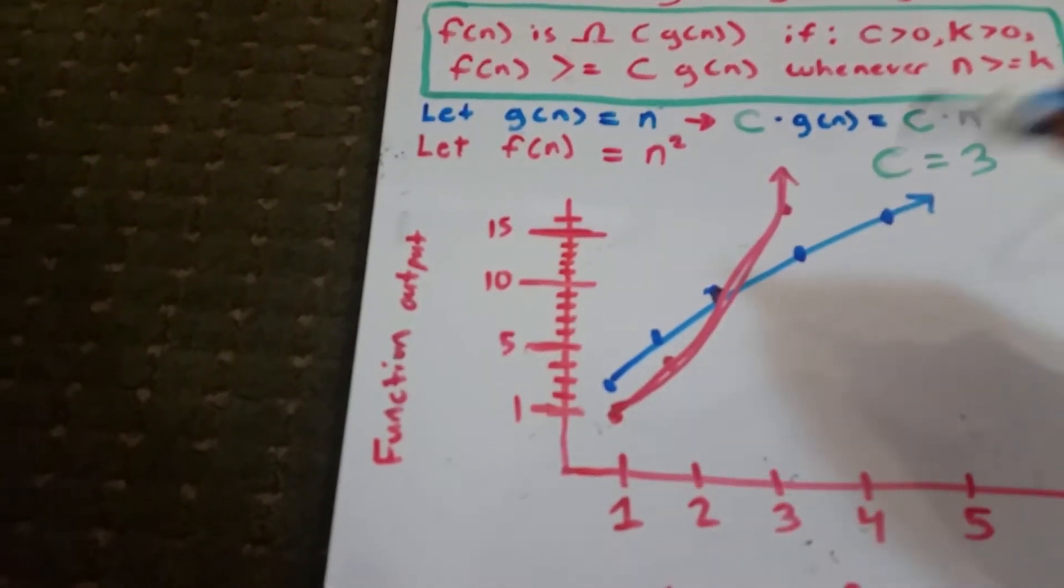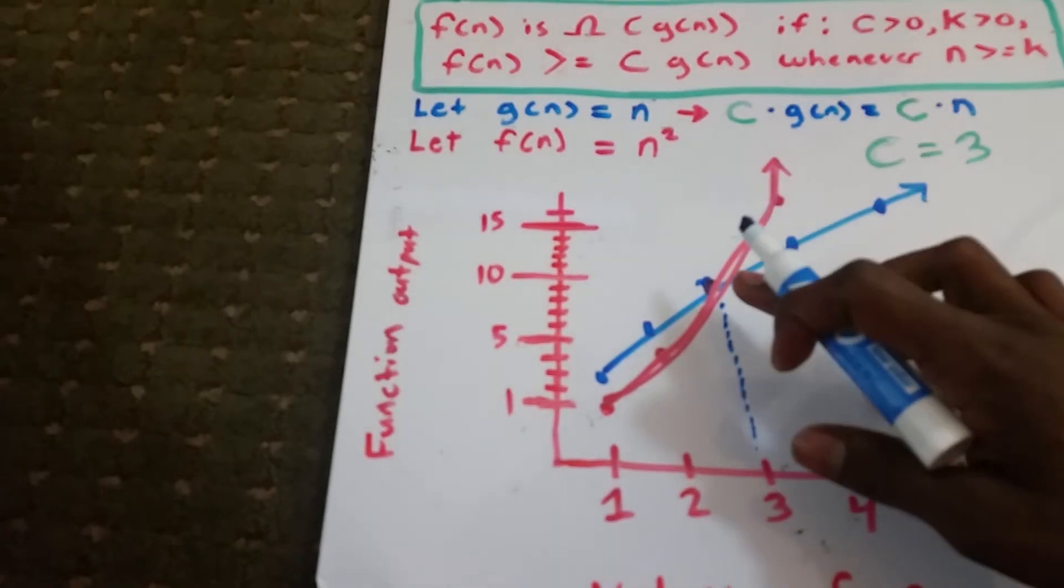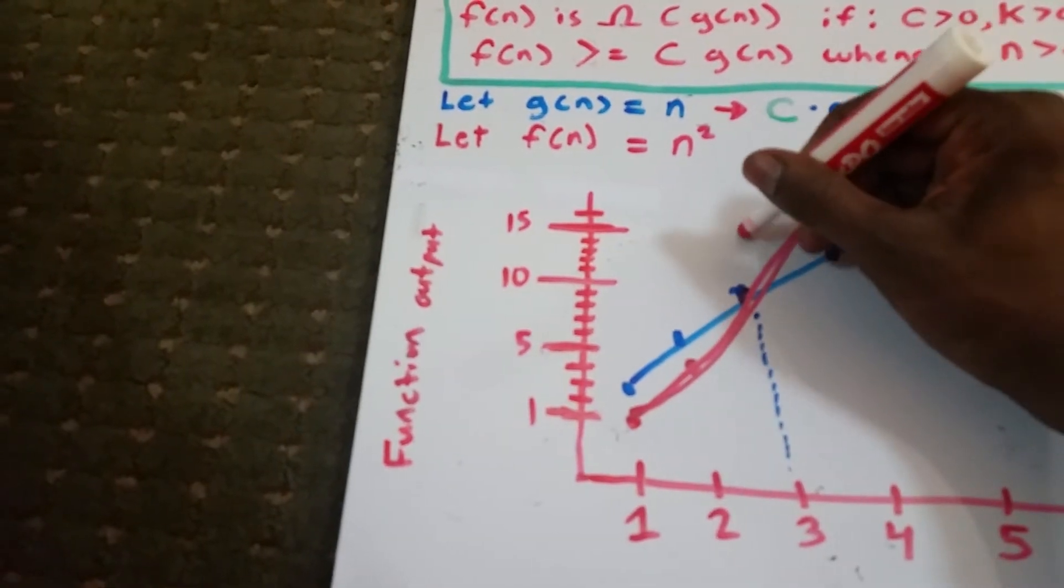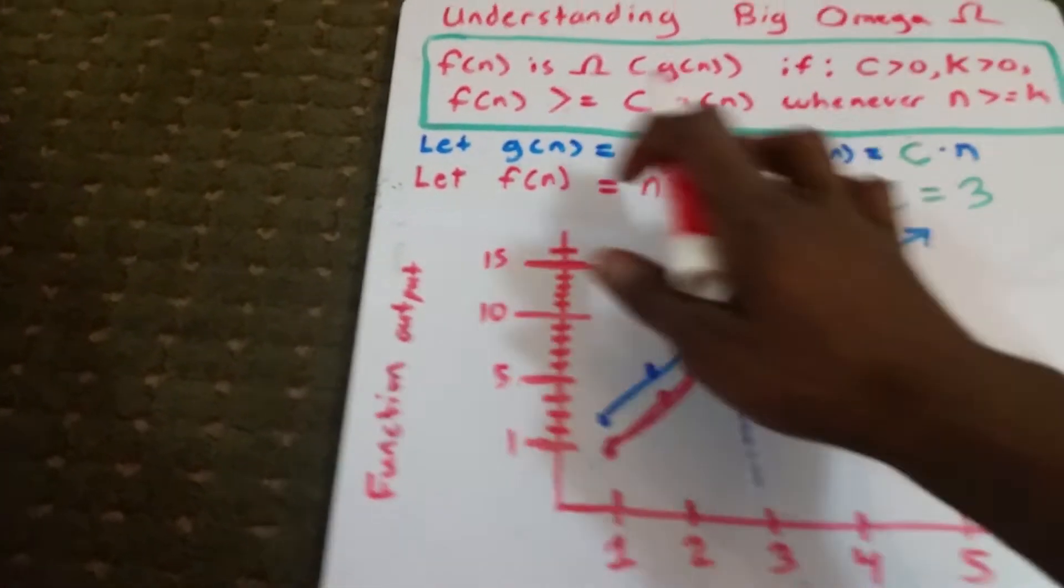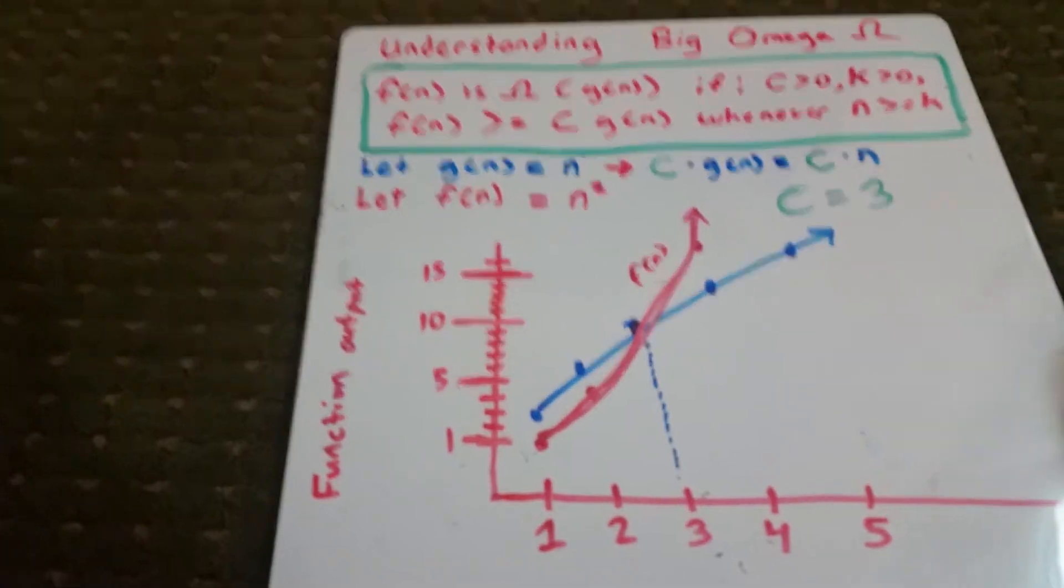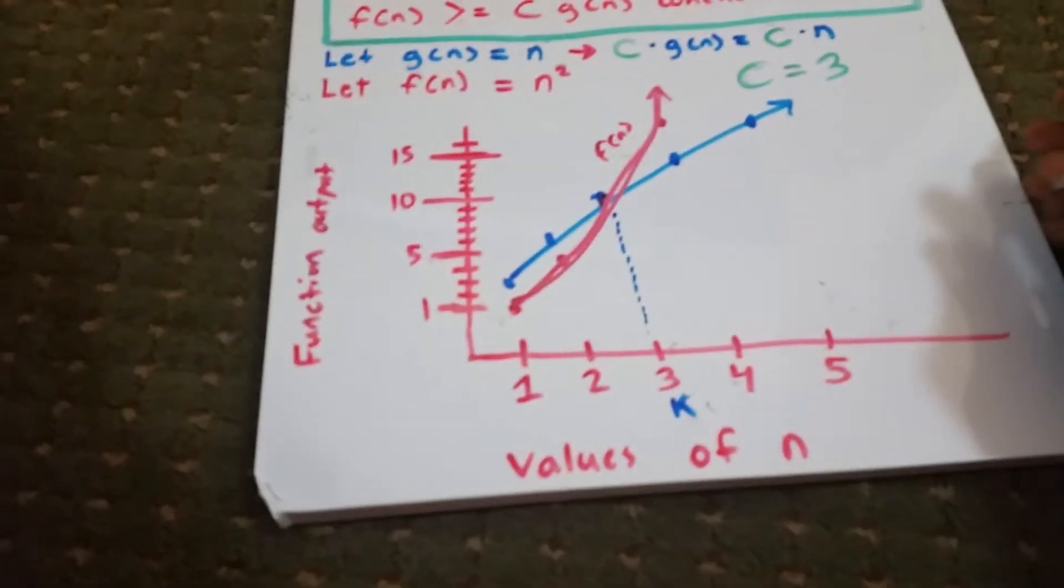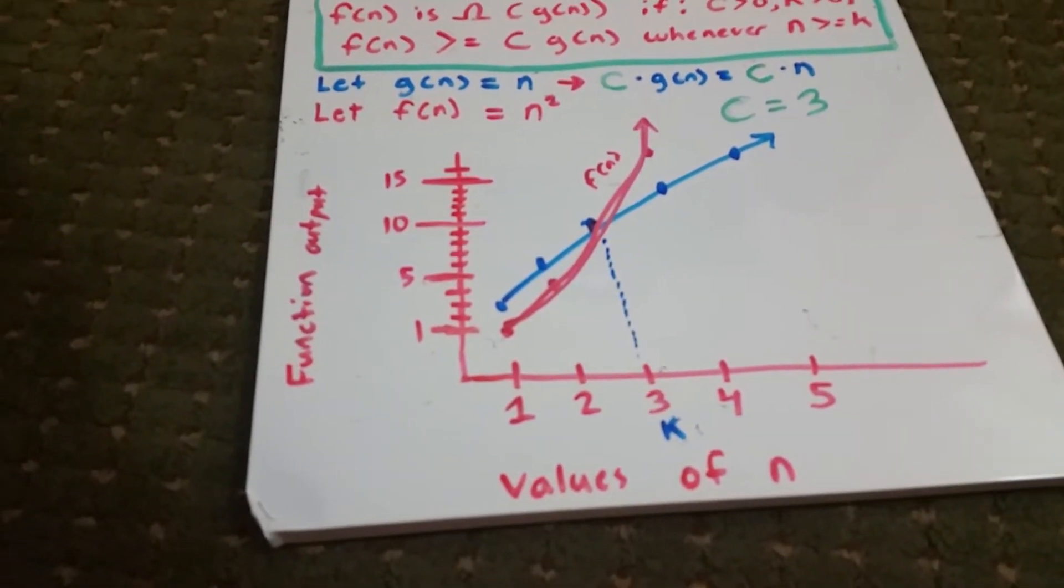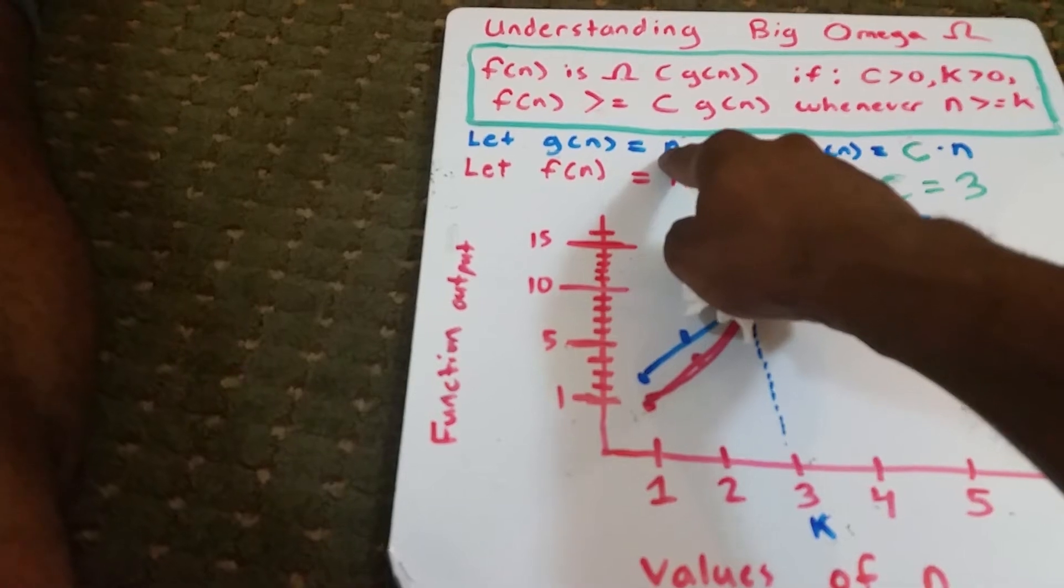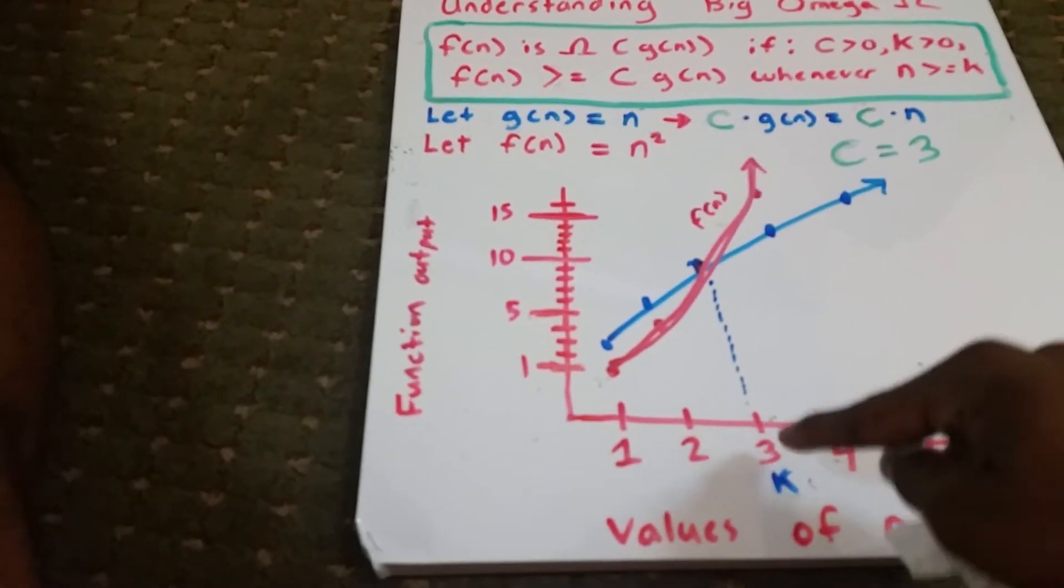But what you can see here, you can see at this point here when n equals 3, our functions are equal. And then after that, our f of n function, that's in red here, grows much faster, greater than or equal to our other function, c times g of n. So what that means is that 3 is our k value.